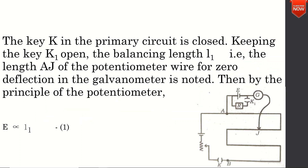The key in the primary circuit is closed. Keeping the key K1 open, the balancing length L1 — that is the length AG of the potentiometer wire for zero deflection in the galvanometer — is noted. By the principle of the potentiometer, E is proportional to L1. The primary circuit is closed and the secondary circuit is open. The balancing length corresponds to zero deflection.